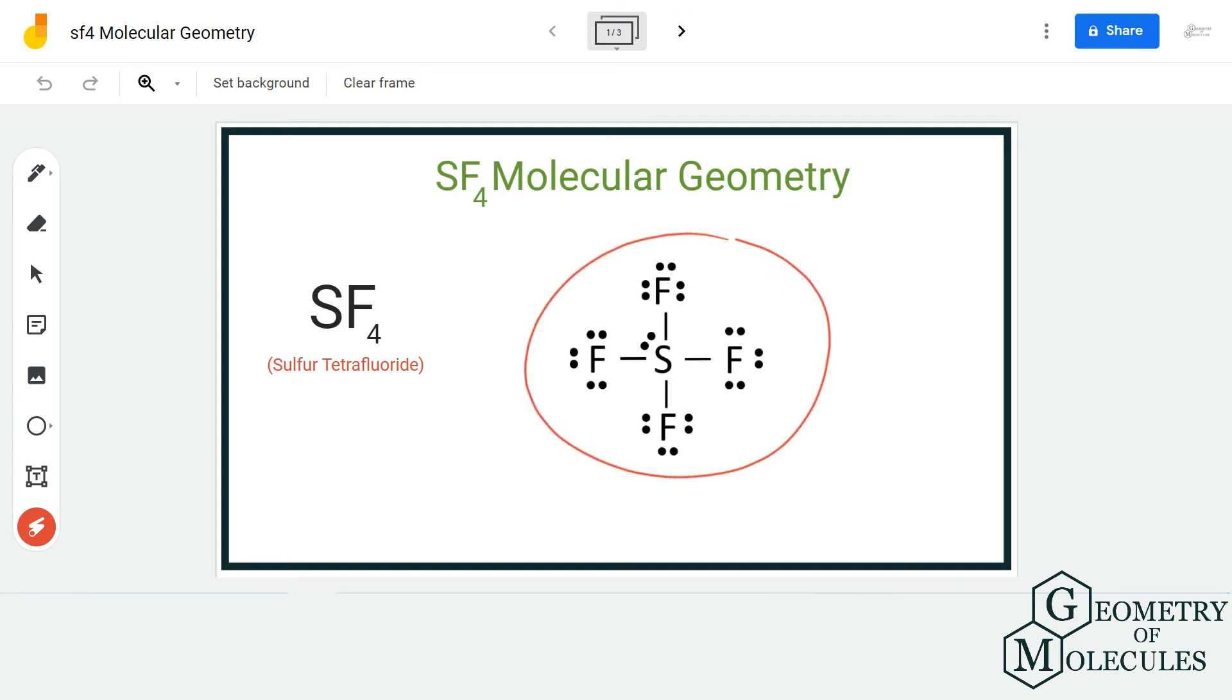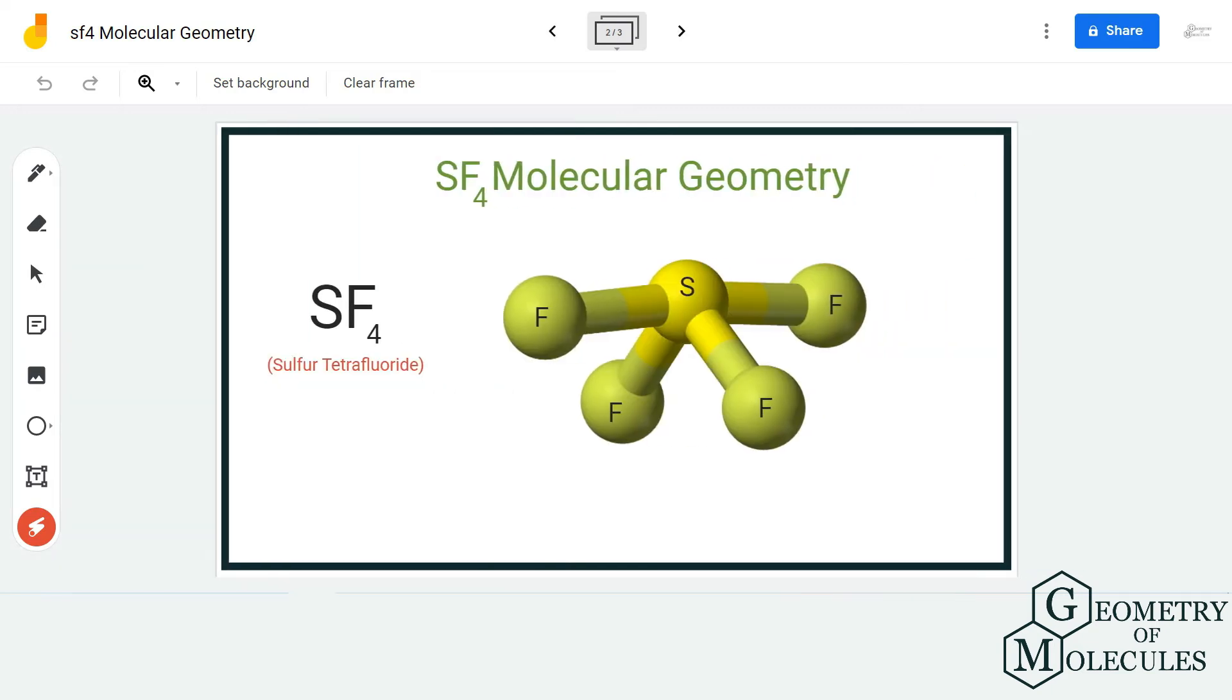Due to the lone pair present on the sulfur atom, these two fluorine atoms are pushed apart from each other. Hence, there is this structure which has quite a resemblance with a seesaw. So this is known as seesaw molecular geometry.